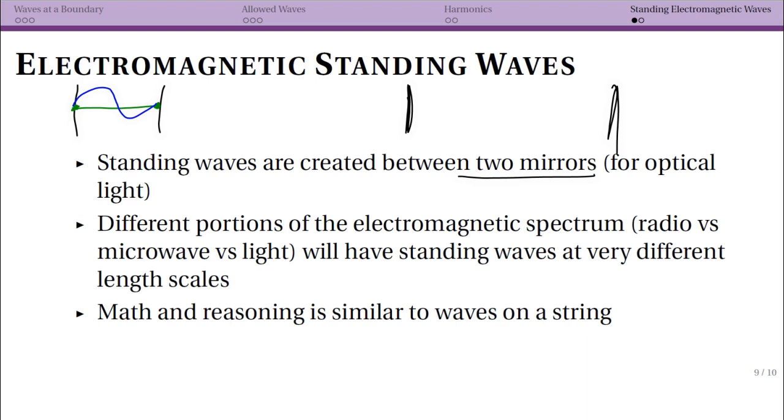You can have similar things that we maybe wouldn't call mirrors if we're dealing with x-rays or radio waves, but frequently we're going to talk about just visible light. So then we have some sort of standing wave in between these two mirrors that I obviously draw very badly but would be a very nice sine wave.